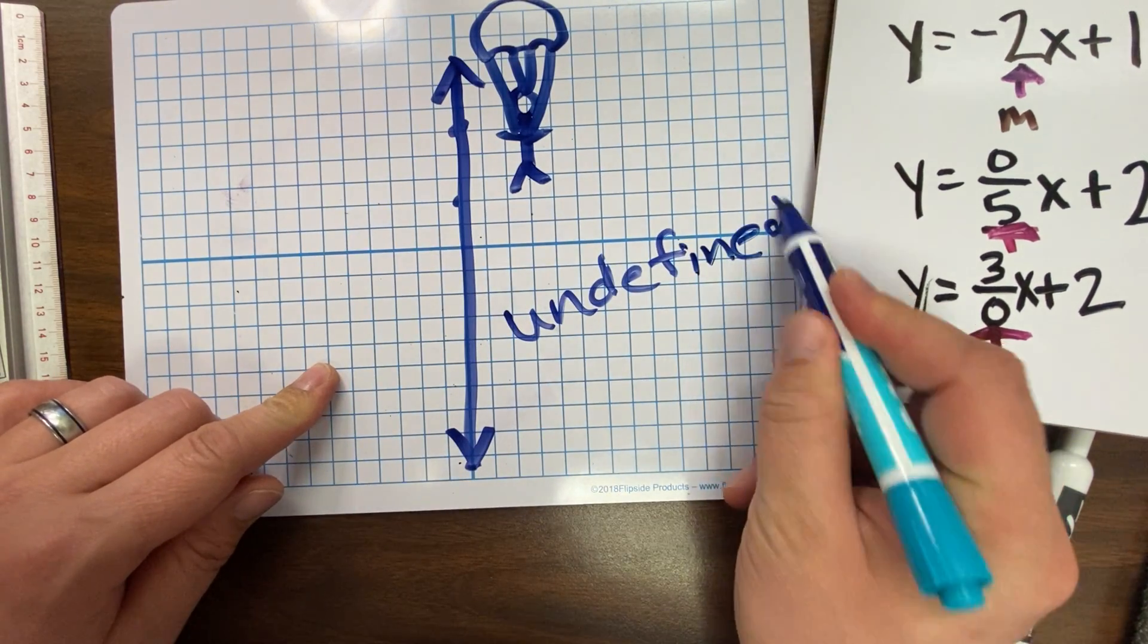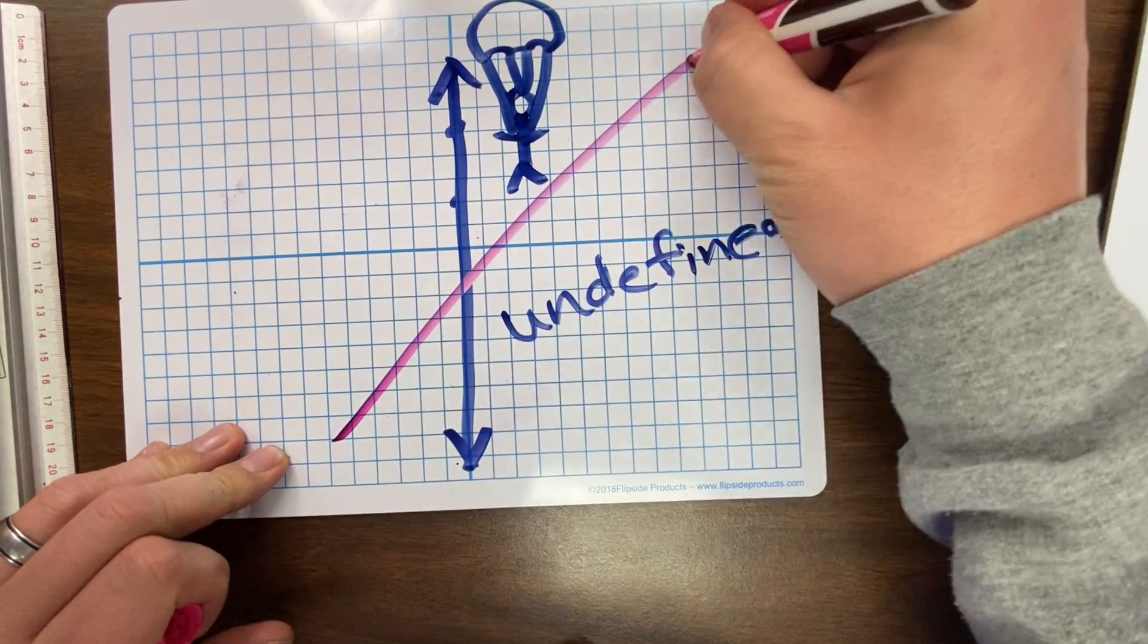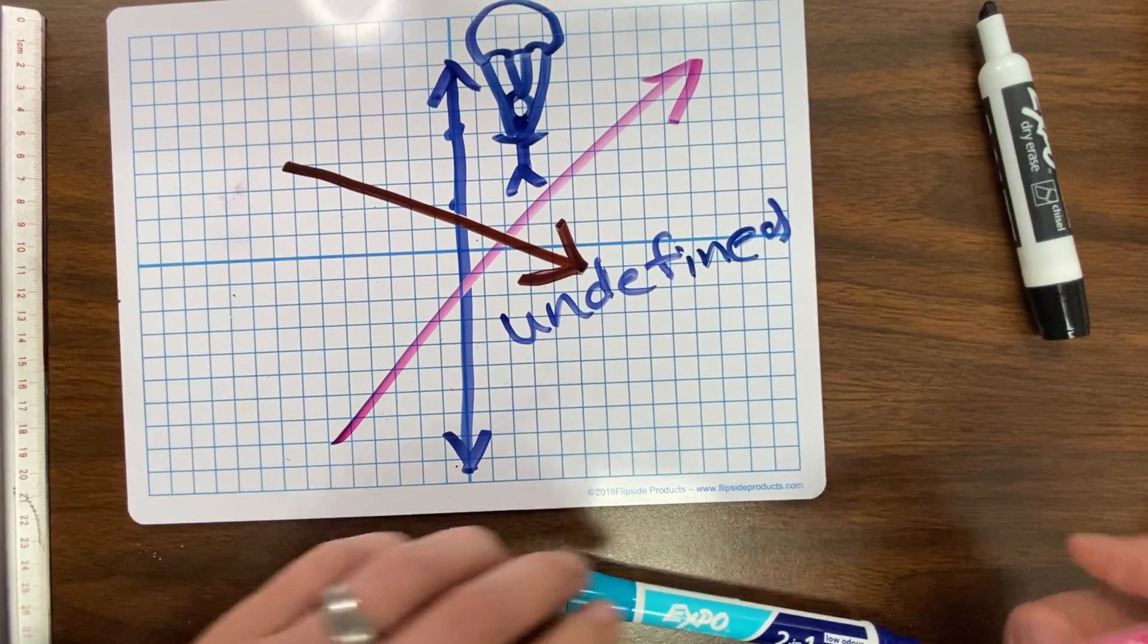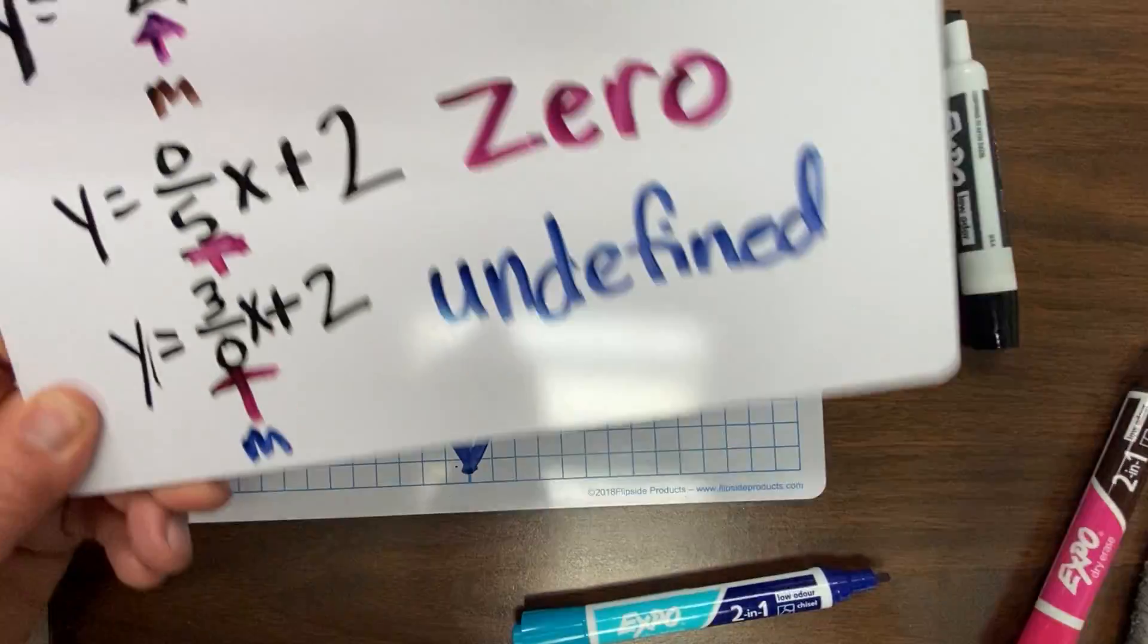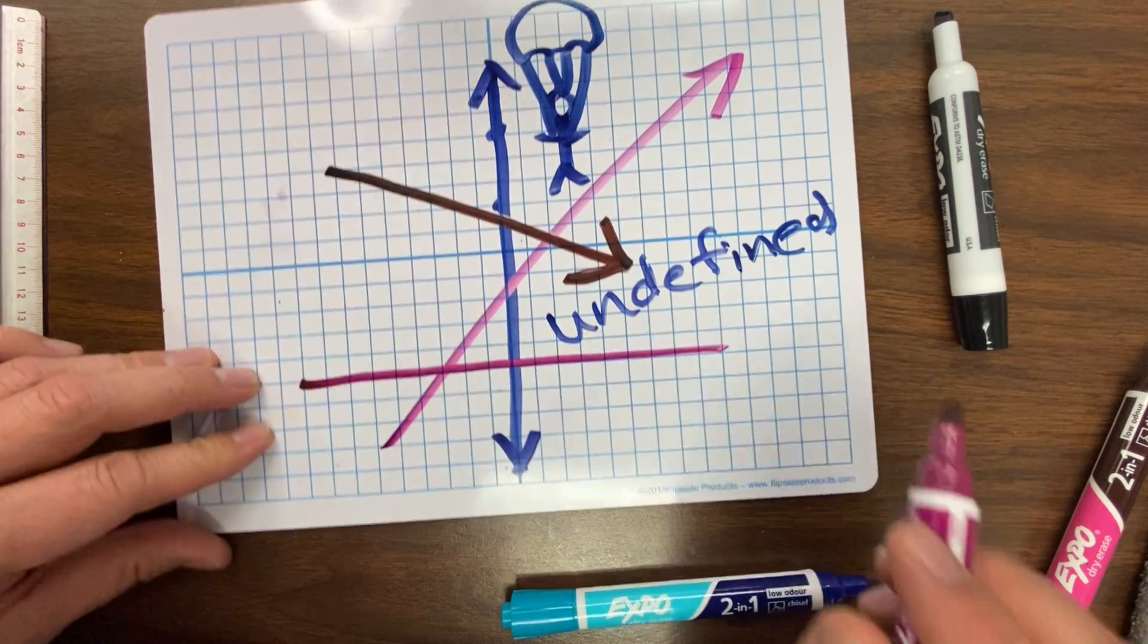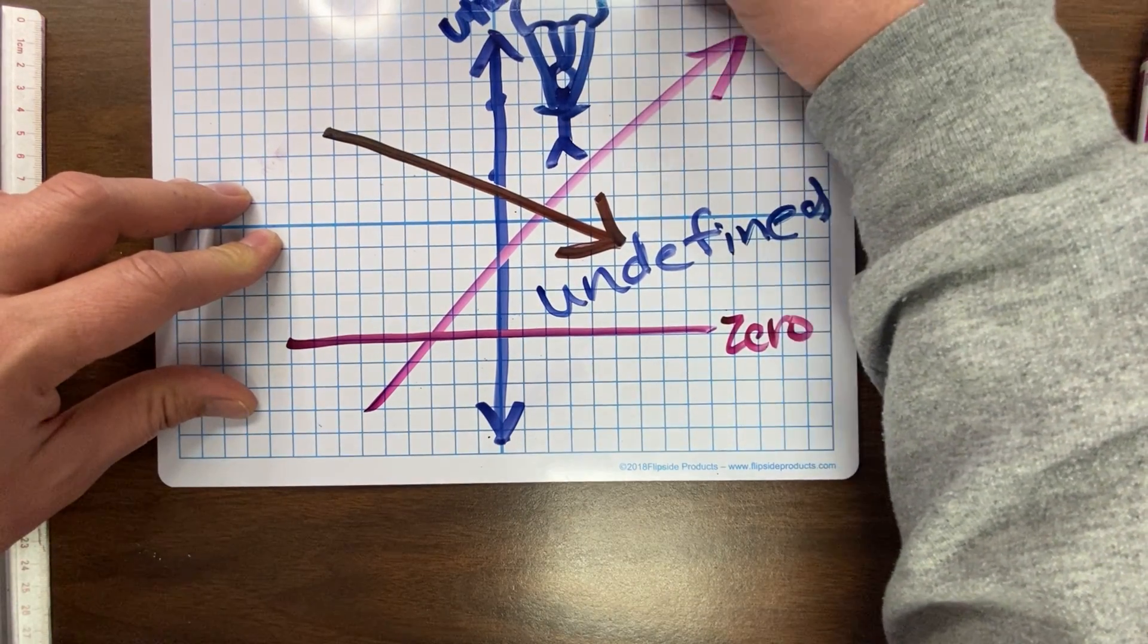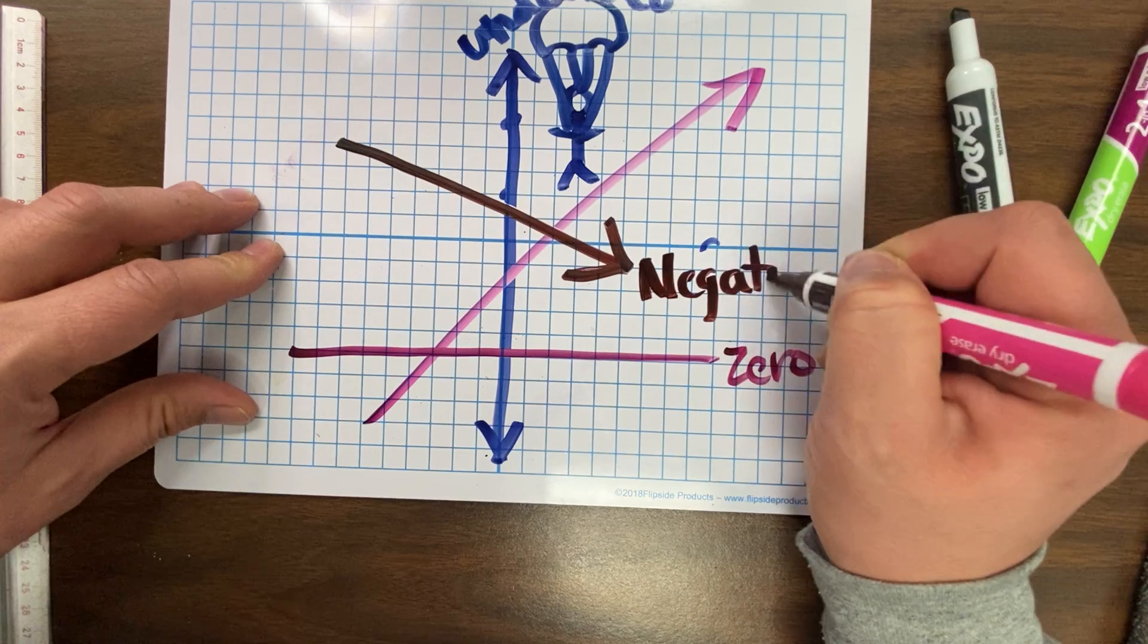So we have positive. Positive is going up. We have negative, which is brown. Negative would be going down. We have 0, which means it's a flat, straight line. And then we have straight up and down, which is undefined. Those are the four types of slope.